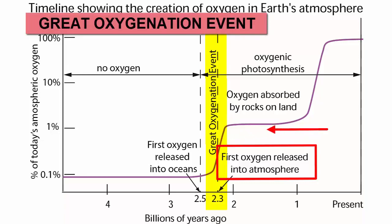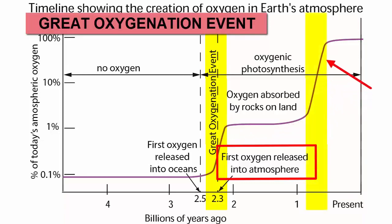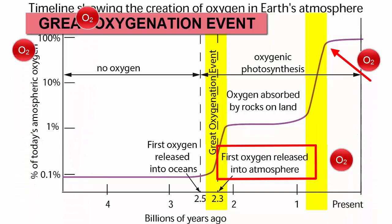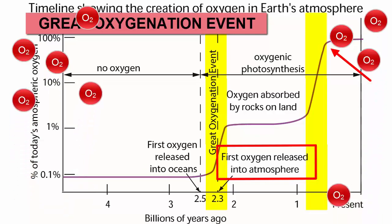It was over 1 billion years later before another large oxygen increase event brought oxygen levels up to today's levels. It took that long for the oxygen to complete its chemical reactions with other atmospheric gases and dissolved metals on Earth's surface. After that work was done, oxygen gas could begin to accumulate in amounts necessary to support more advanced life.